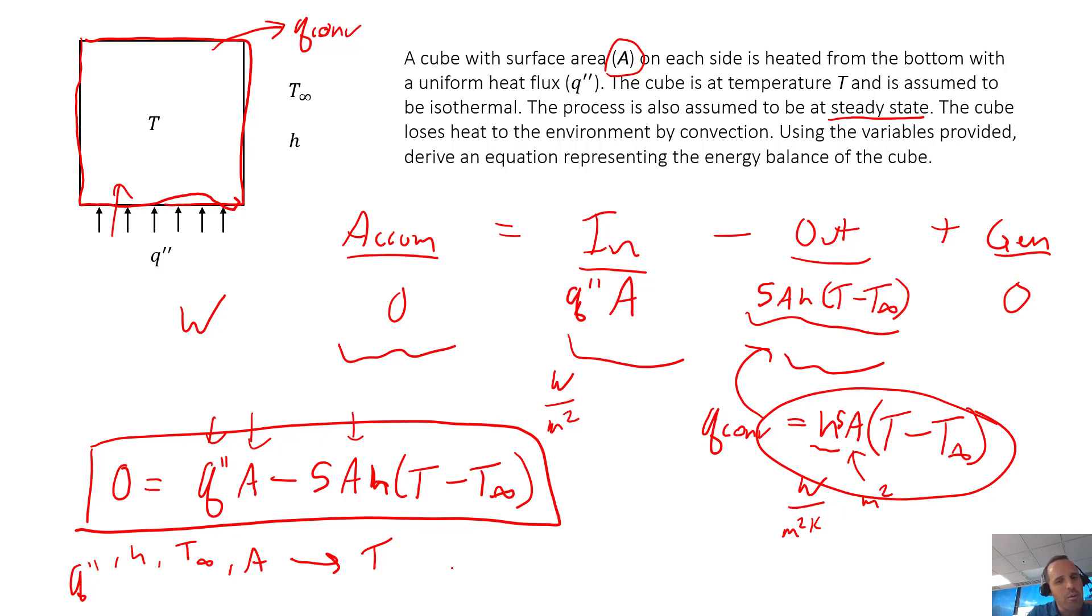We could solve for any number of these different quantities. Presumably since we have one equation, to have a fully specified system we'd be solving for one unknown.